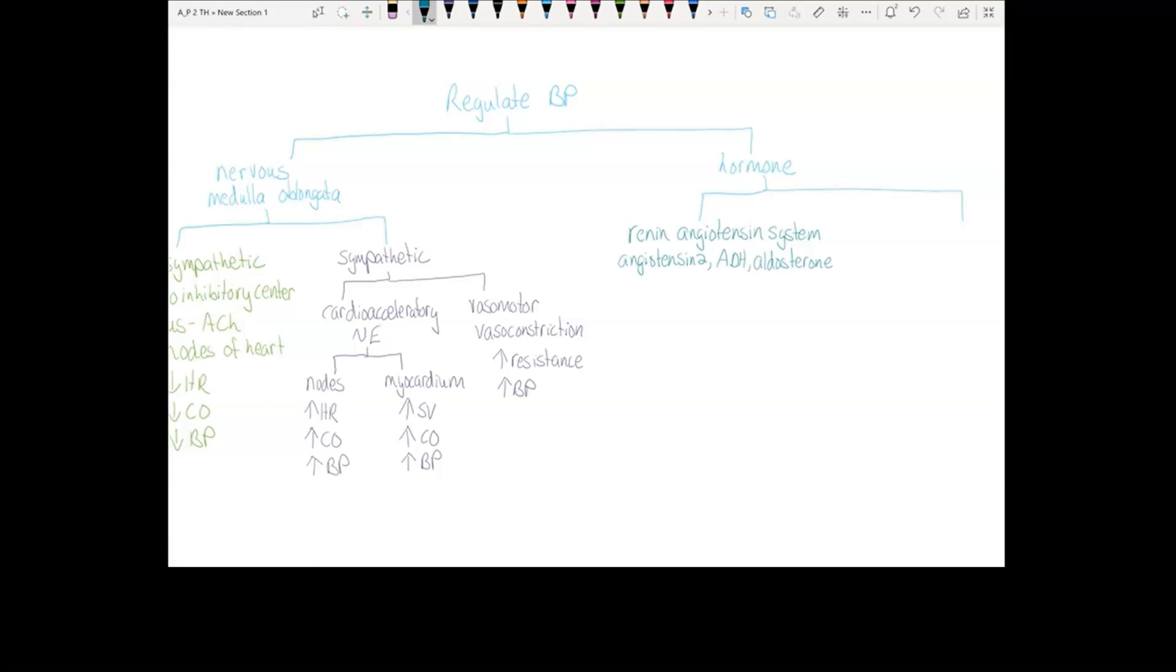These hormones have two main effects. They increase your blood volume by causing the hypothalamus to feel thirsty and by causing the kidneys to make less urine. And if you increase blood volume, you increase blood pressure. They also act on your blood vessels and cause vasoconstriction. This increases resistance, which increases blood pressure.